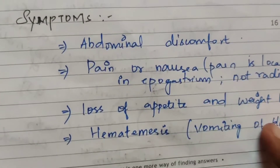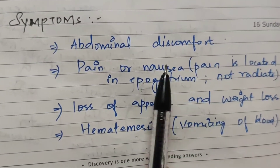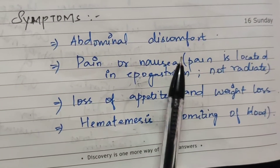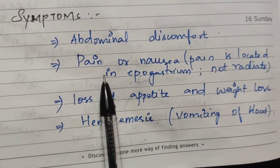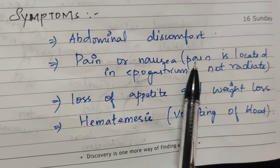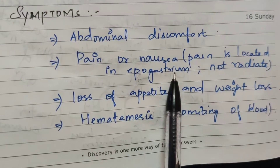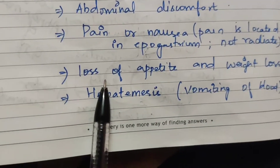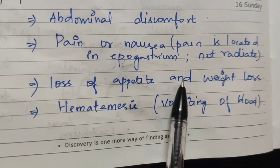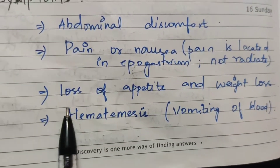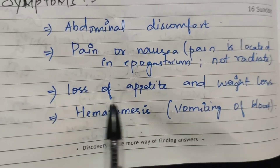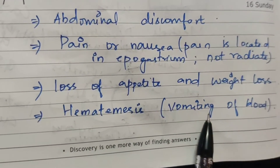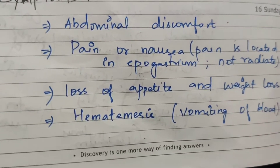Next are the symptoms: abdominal discomfort, pain, or nausea located in the epigastric region and not radiated. Loss of appetite and weight loss. Hematemesis — vomiting of blood.